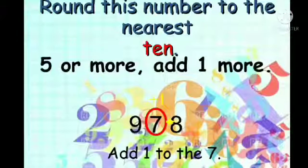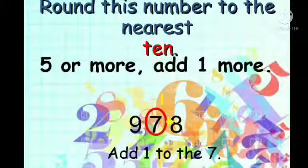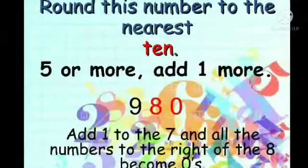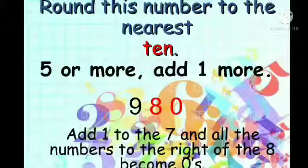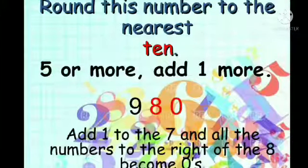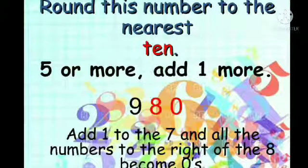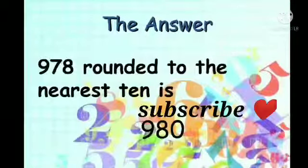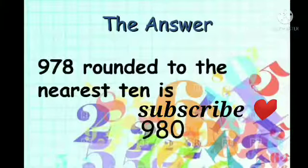5 or more, add 1 more. Now, the number is 8 — it is greater than 5. So, add 1 to the 10th place number. Add 1 to the 7: 7 plus 1 equals 8, and all numbers to the right become 0. So, the answer is 980.